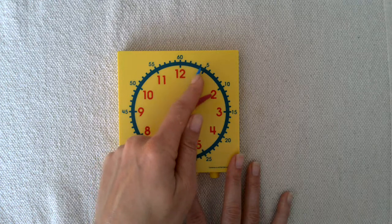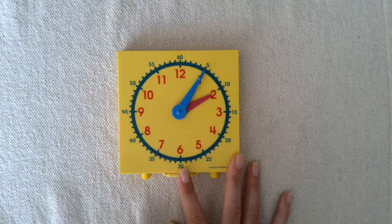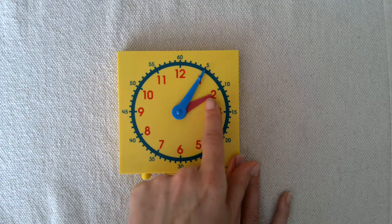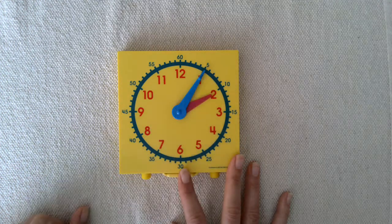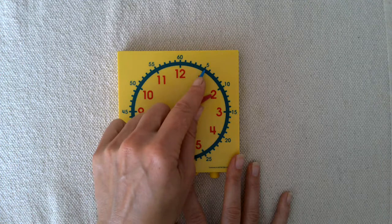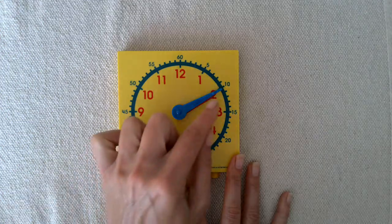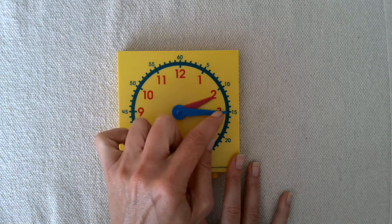If I move my minute hand to the five, my clock face shows two o'five. Now it shows two ten. Two fifteen.